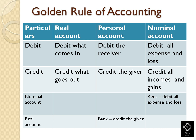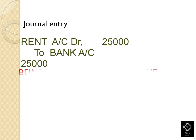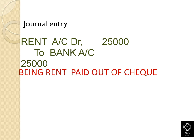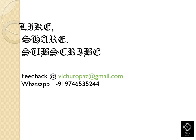For bank payment — bank is a current asset. For a real account, we credit the giver, so bank is credit. Now you can see the two entries on the journal page and the complete clarification.